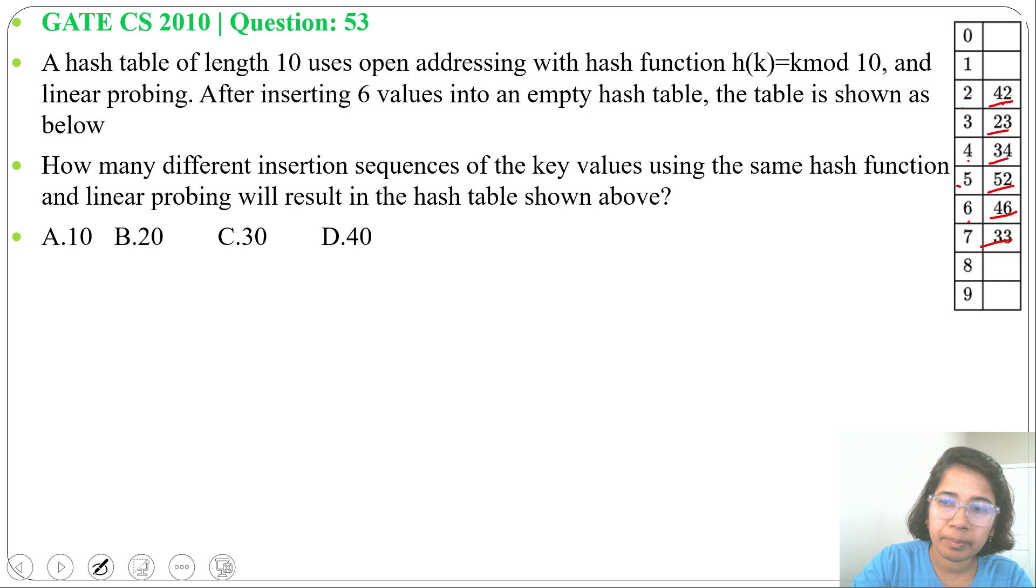52 hash value will be 2, 52 divide 10 remainder is 2, 33 divide 10 remainder is 3. 33 is at slot 7 means 33 should be at end.